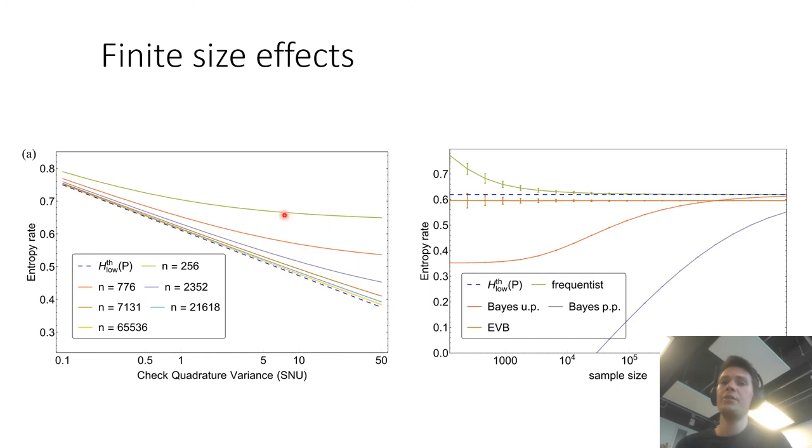And as we increase the number of samples for estimating this bound our estimate will get better but it's always positively biased. That can be a problem because this would lead to an overestimation of the number of bits you can extract.